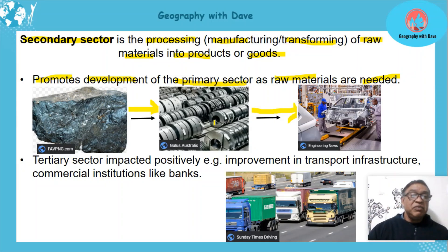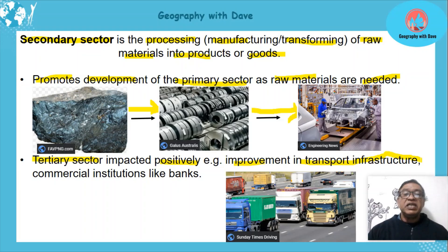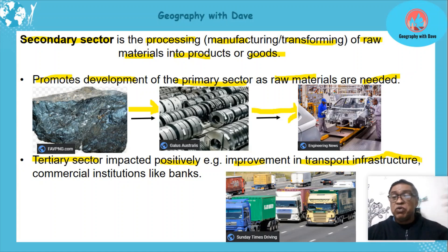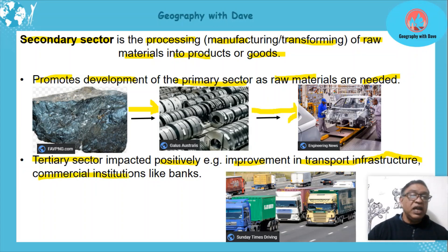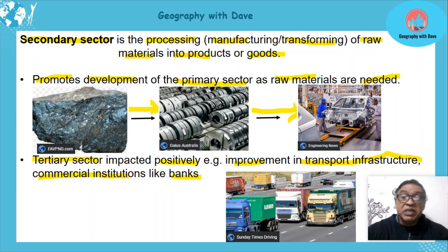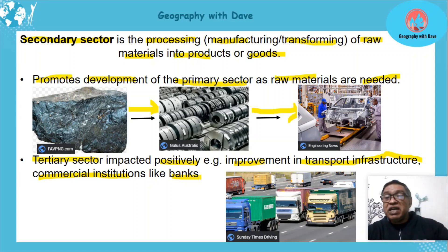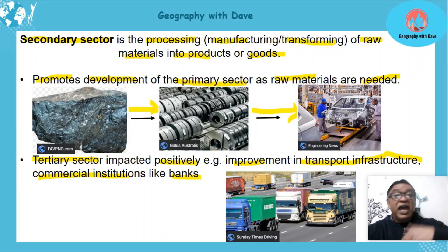The tertiary sector is also impacted positively. One example is improvement in transport infrastructure — because there's more production, we need more trucks and must develop road and rail infrastructure. Commercial institutions like banks also grow to service these businesses and industries. Car sales showrooms are another example of tertiary sector growth that comes from more manufacturing.